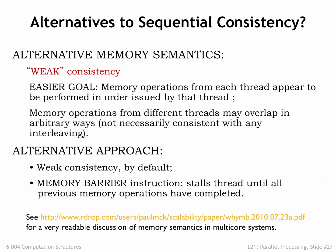One possible fix is to give up on sequential consistency. An alternative memory semantics is weak consistency, which only requires that the memory operations from each thread appear to be performed in the order issued by that thread. In other words, in a weakly consistent system, if a particular thread writes to X and then writes to Y, the possible outcomes from reads of X and Y by any thread would be: X unchanged and Y unchanged, X changed and Y unchanged, or X changed and Y changed. But no thread would see Y changed but X unchanged. Memory operations from other threads may overlap in arbitrary ways, not necessarily consistent with any sequential interleaving.